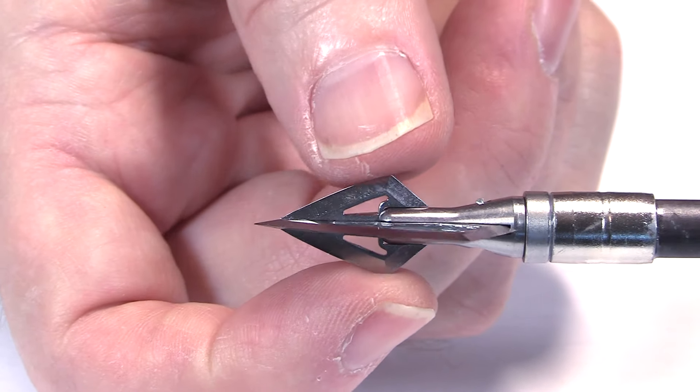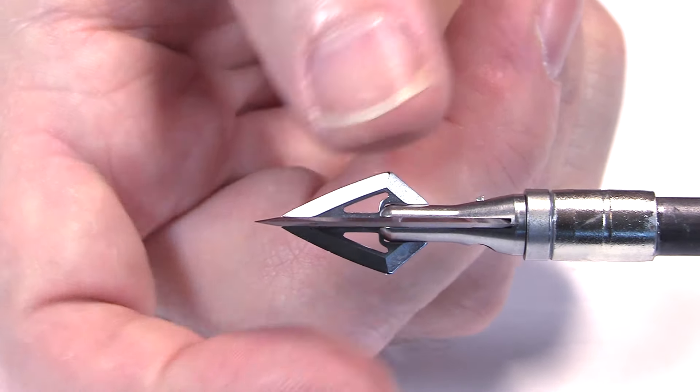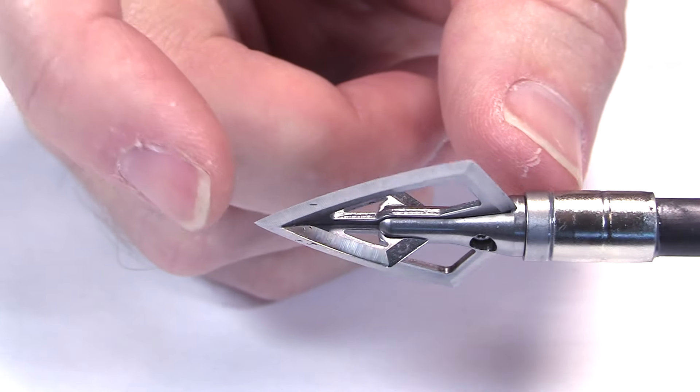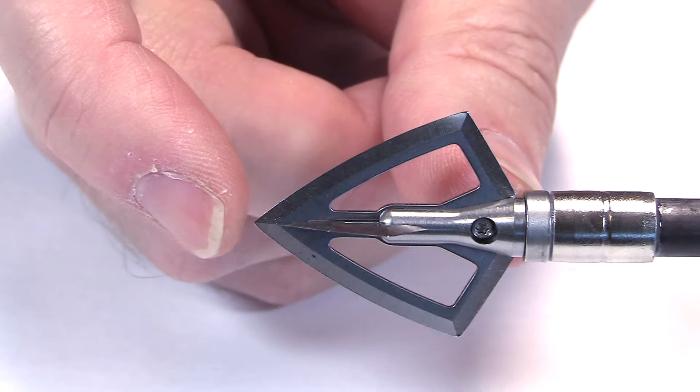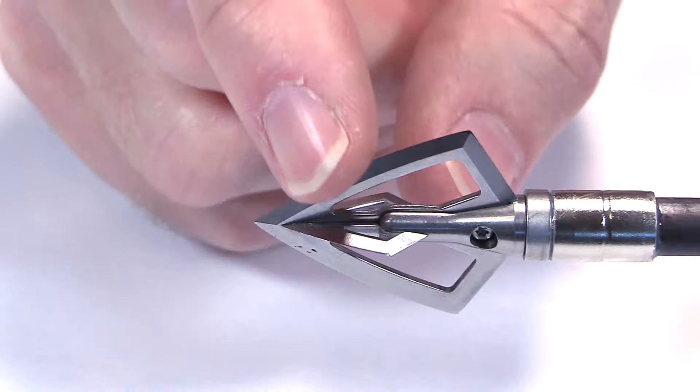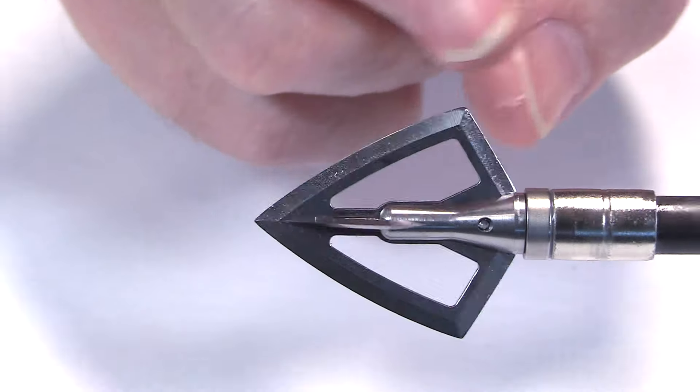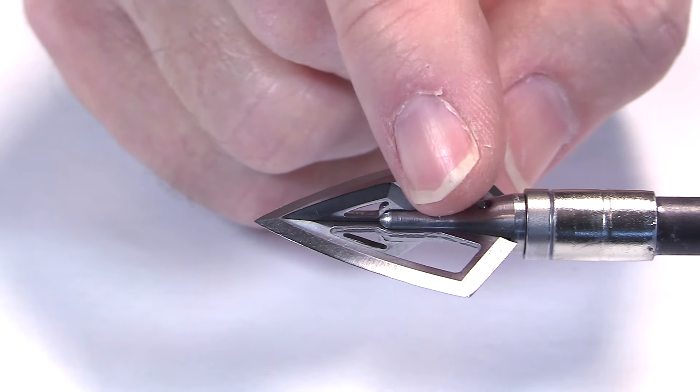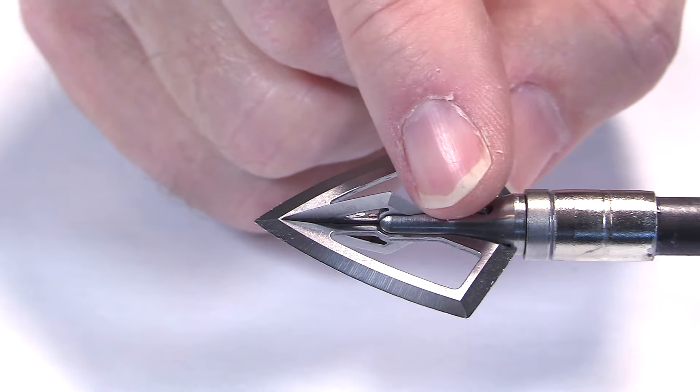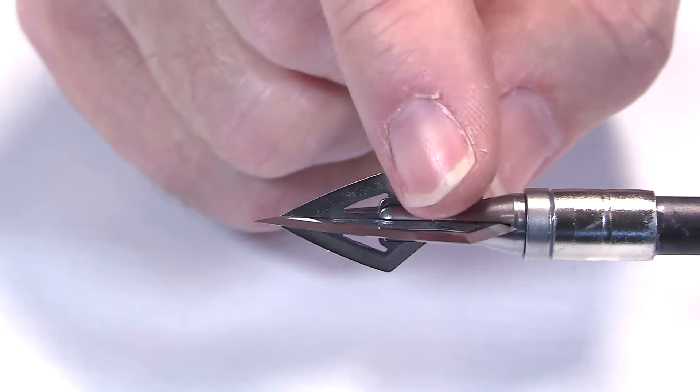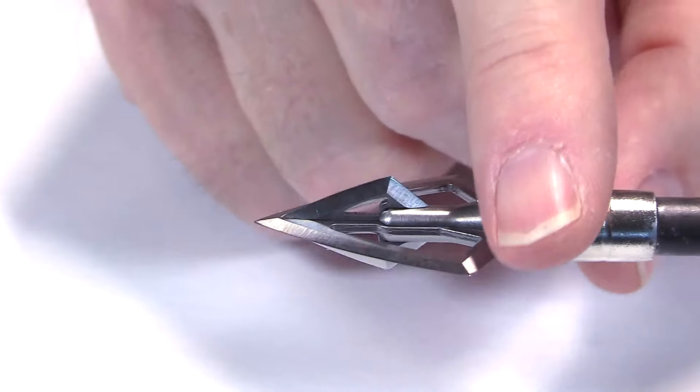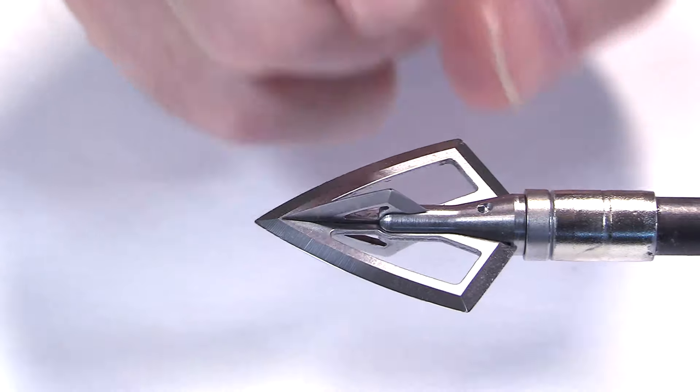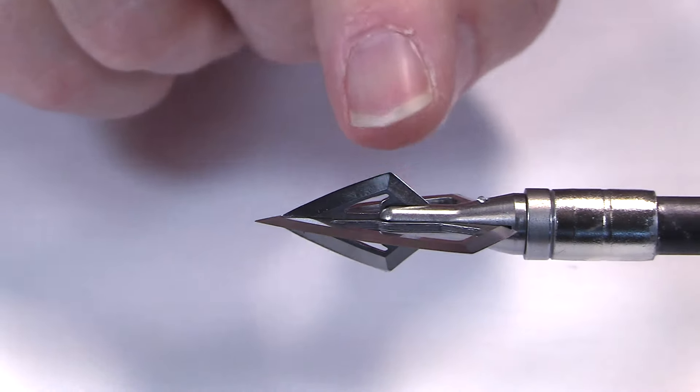The cutting diameter of the main blade is one and one-eighth inches and then of the bleeder is 0.5 inches. The total overall length is 1.3 inches, so pretty compact design. It's double bevel, sharpened all the way around on the backs as well as the fronts of the blade. That's just going to aid in being able to pull it out of a target, as well as if it's backing out of an animal, it's going to be cutting in all four dimensions.